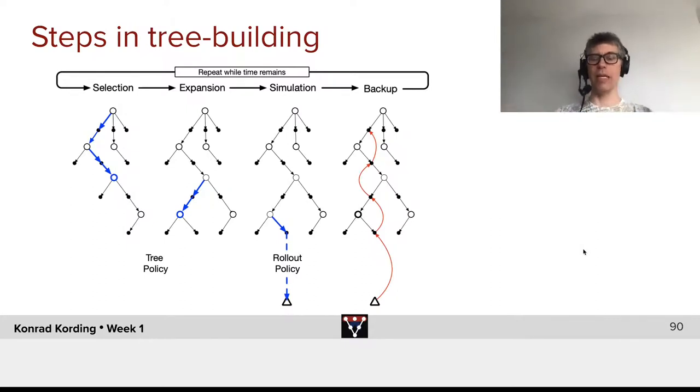We will then run a simulation where we do a rollout, where we consider where we go to the end of the tree, and then ultimately do the rollout there. And then we will back up, taking those results that we have at the end and propagating it back all the way to the relevant states and actions. And those are the steps that we have when we build these Monte Carlo tree search trees.